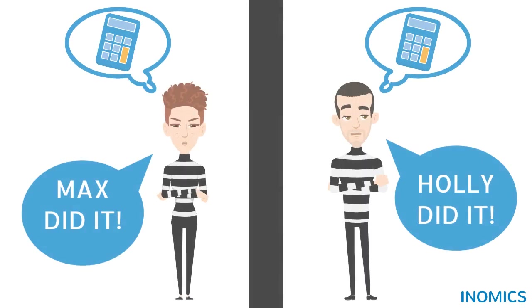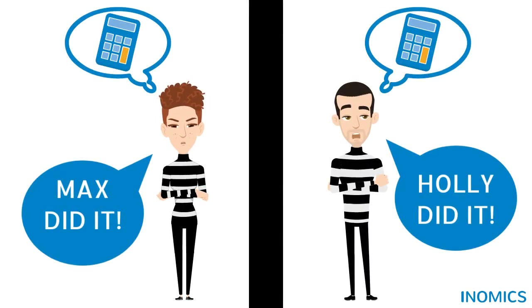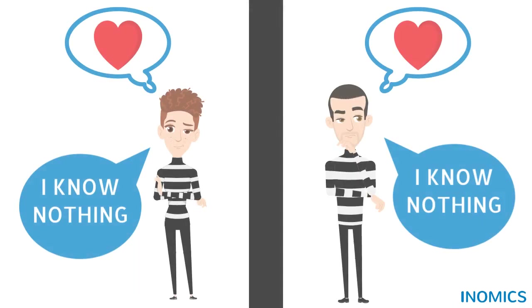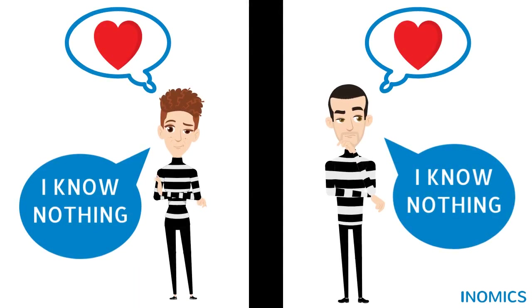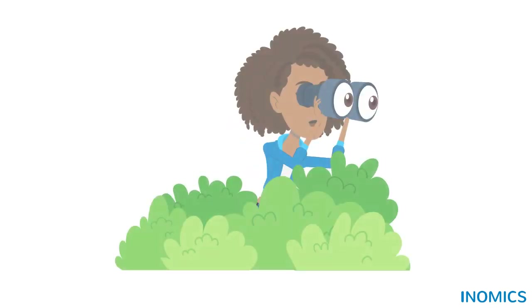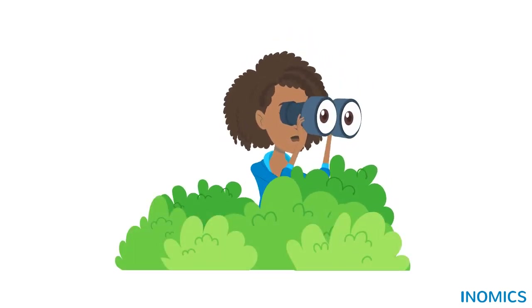Nevertheless, game theory that assumes players always strive rationally to maximise their own payoffs has one central issue. In reality, people do not always act selfishly in their own self-interest. Numerous studies have found that people are more likely to cooperate than the Prisoner's Dilemma would suggest. Indeed, it requires a very narrow and suspicious view of human behaviour in order to function. But this is a wider discussion.